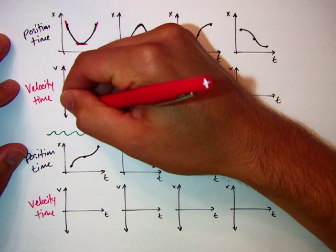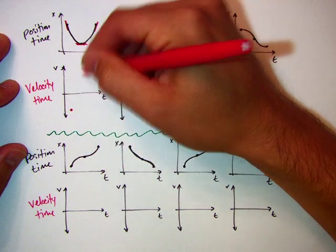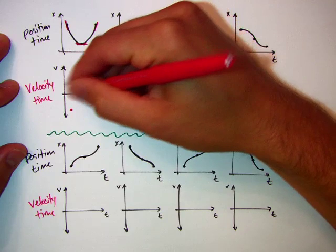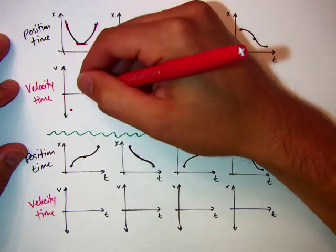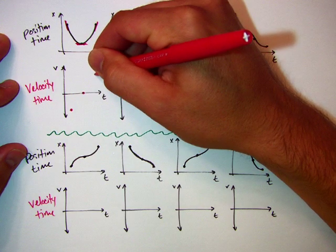So I've got to start with a negative velocity. By the time I reach this position, I'm going to be at a velocity of zero. I've crossed the axis, and here I'm going to be positive.